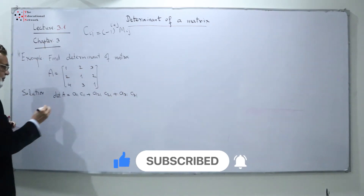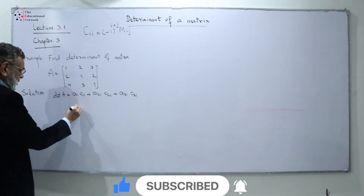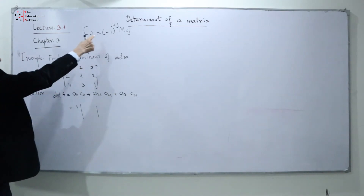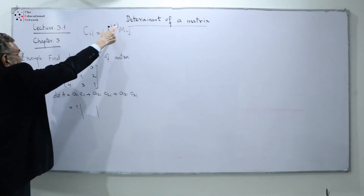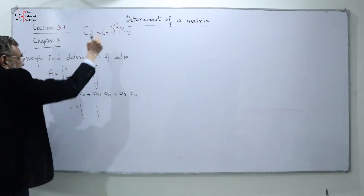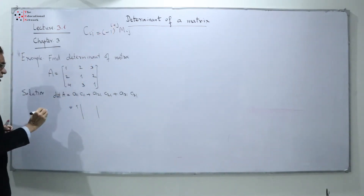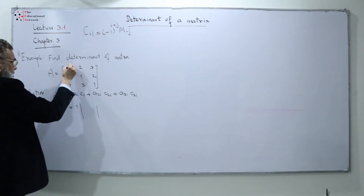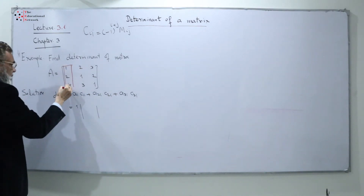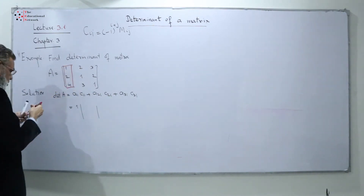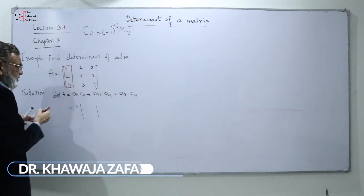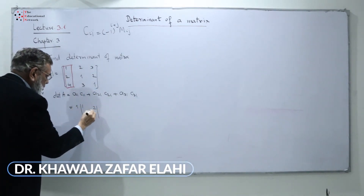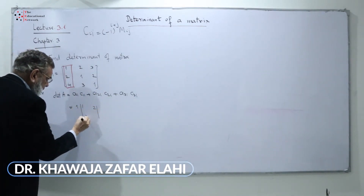We write the cofactors of A11. Where is A11? A11 is 1. The cofactor of A11 has a plus sign because the sign is (-1)^(1+1) = plus. We block this column and this row, and what we get is the 2x2 matrix with entries 1, 2, 3, 1.